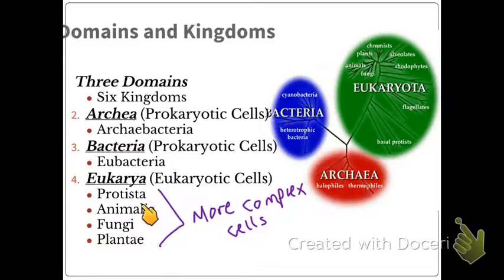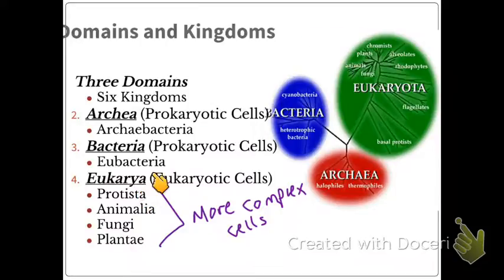These each are kingdoms: protists, animals, plants, and fungus — four kingdoms here. Eubacteria and archaeobacteria are both kingdoms as well.